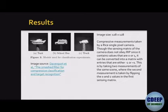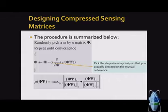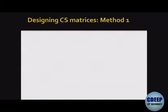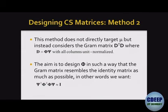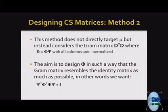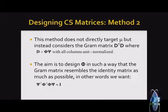Last time we looked at designing compressed sensing matrices by doing a descent on a softened version of the coherence using the softmax function. Now we look at a different method. This method does not directly target mu (the coherence), but instead considers the Gram matrix D^T D, where D equals phi*psi with all columns unit-normalized. The mutual coherence is the maximal absolute dot product of any two different columns of the matrix D.